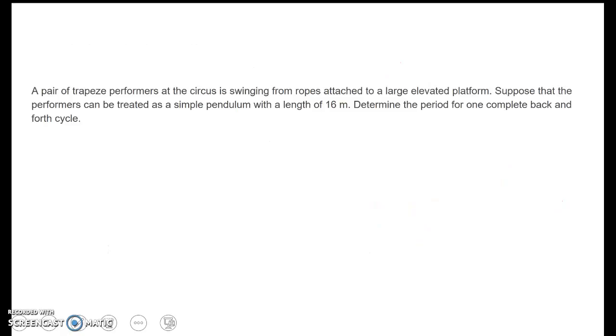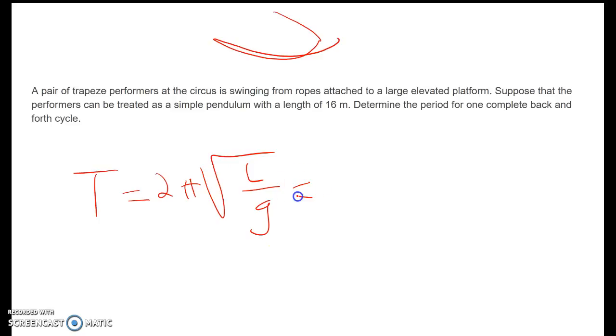So let's look at an example problem here. We've got some trapeze performers at a circus, and they're swinging from ropes attached to a large elevated platform. So we have that motion of a pendulum with our swinging. It's going to go back and forth. Suppose that the performers can be treated as a pendulum with a length of 16 meters. Determine the period for one complete back-and-forth cycle. So time is equal to 2π square root of L over G. We're going to assume Earth, so we're going to stay with 2π. Square root, our length is 16 meters, and our G is 9 meters per second squared.